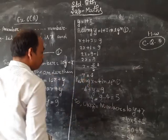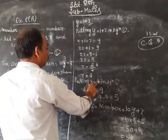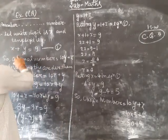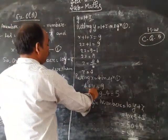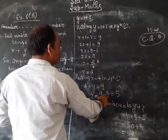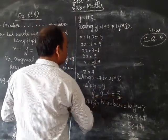Putting x equals 4 in equation 1: x plus y equals 9, so 4 plus y equals 9, therefore y equals 5.